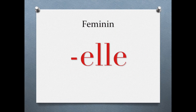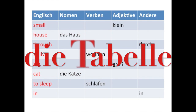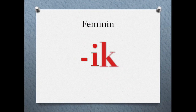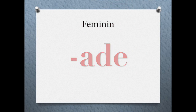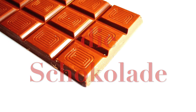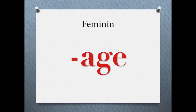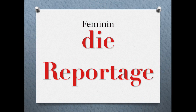An example for -ELLE (E-L-L-E) would be 'die Tabelle', and -IK can be found in 'die Romantik'. The -ADE (A-D-E) ending can be found in 'die Schokolade', and -AGE, for example, in 'Reportage' — that one has more of a French pronunciation.